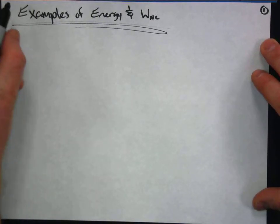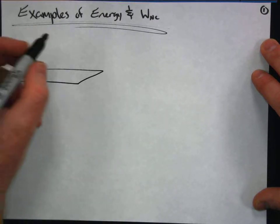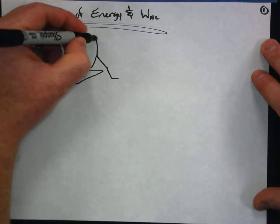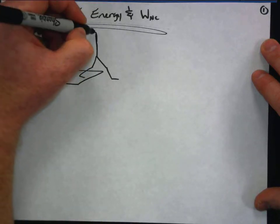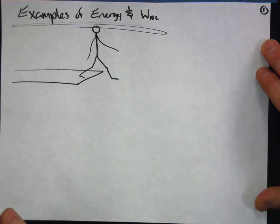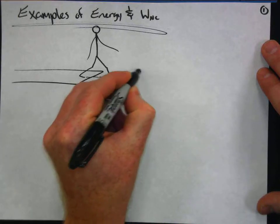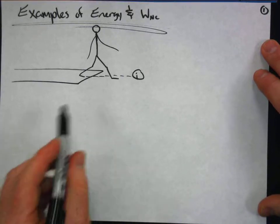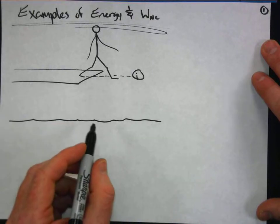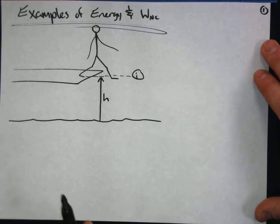The first example involves a person on a diving board who has stepped off. We have this initial position, and the diving board is some distance above the water line. We're going to call this H — the distance above the water line where this person begins.